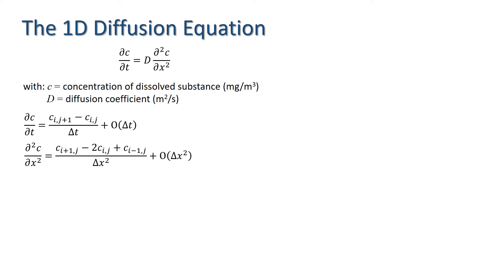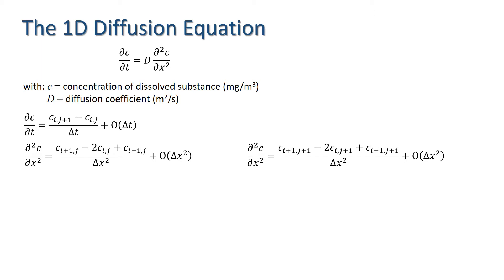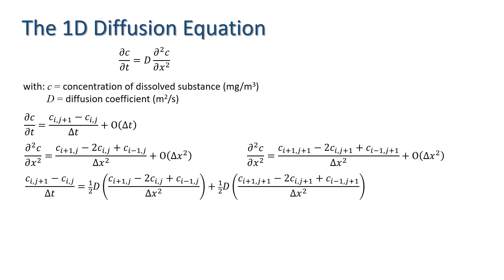Going back to our approximation for d²c/dx², we could use a central difference approximation evaluated at time step j+1 instead of j. Using both of these, we can set up an implicit scheme. Here I'm going to set up a scheme of the Crank-Nicholson type, where an equal weighting is given to the two spatial derivative approximations.